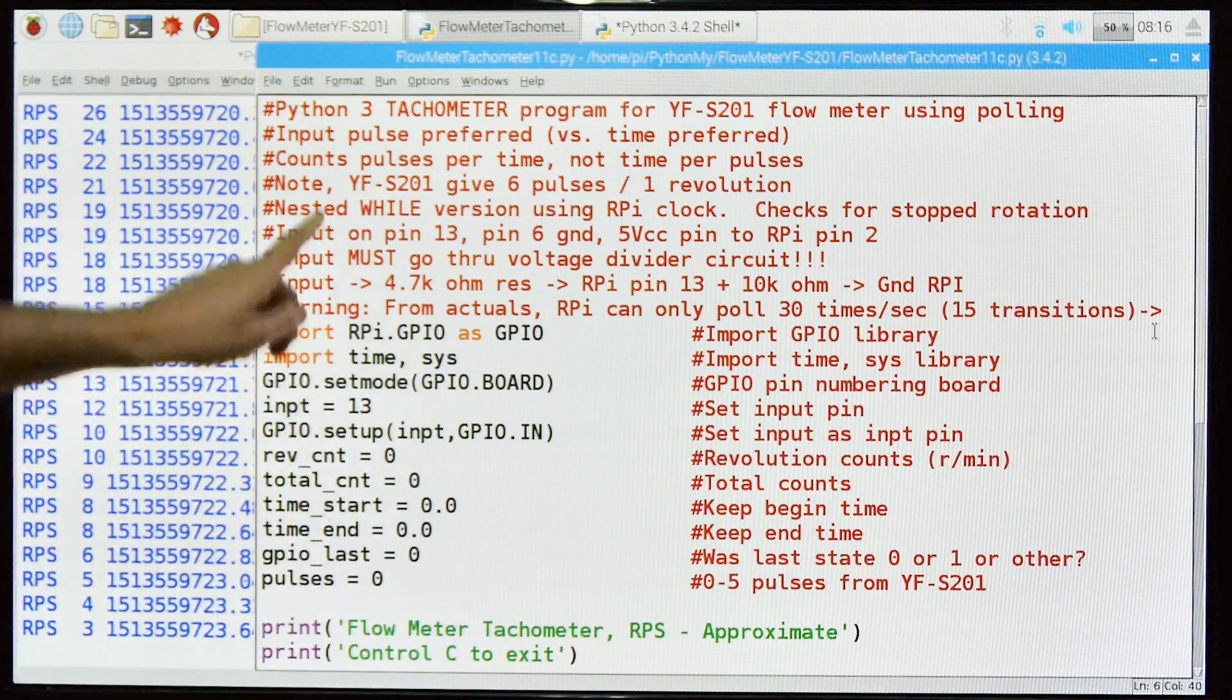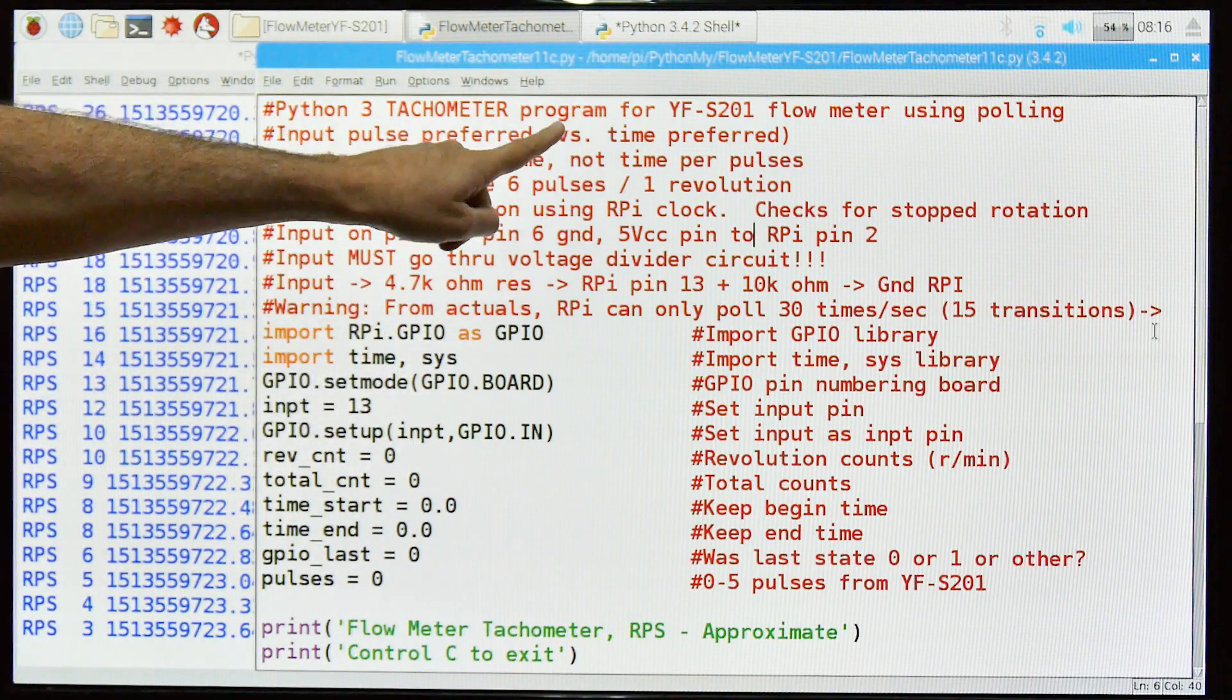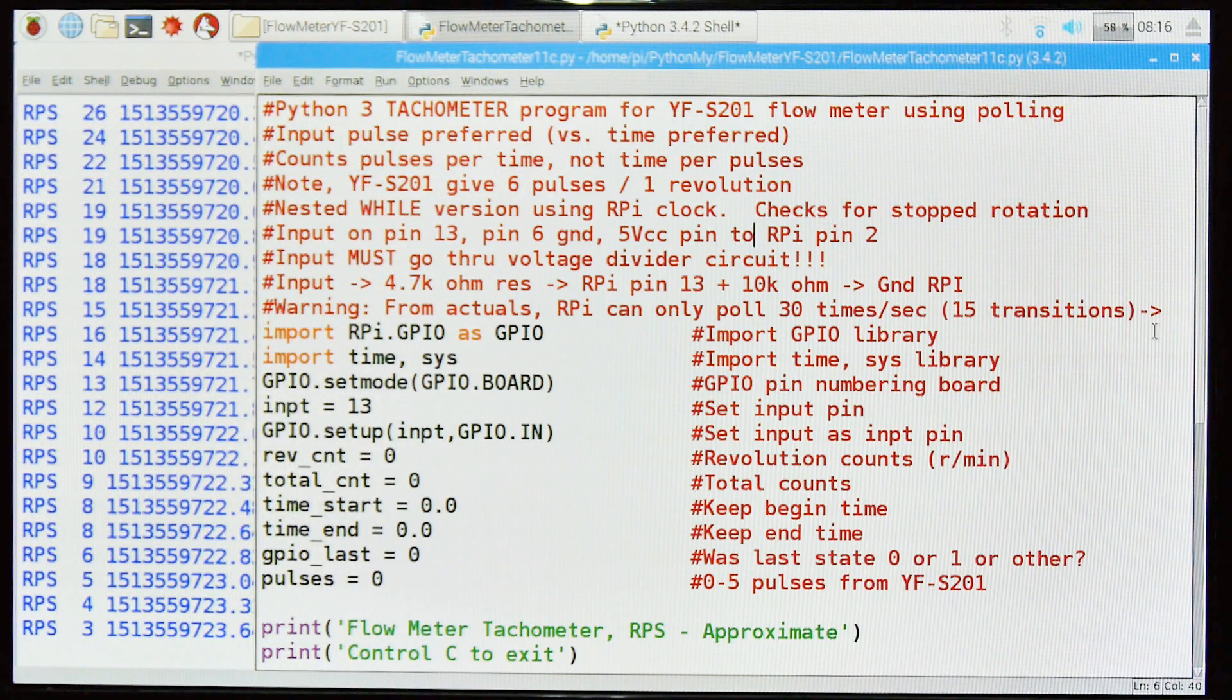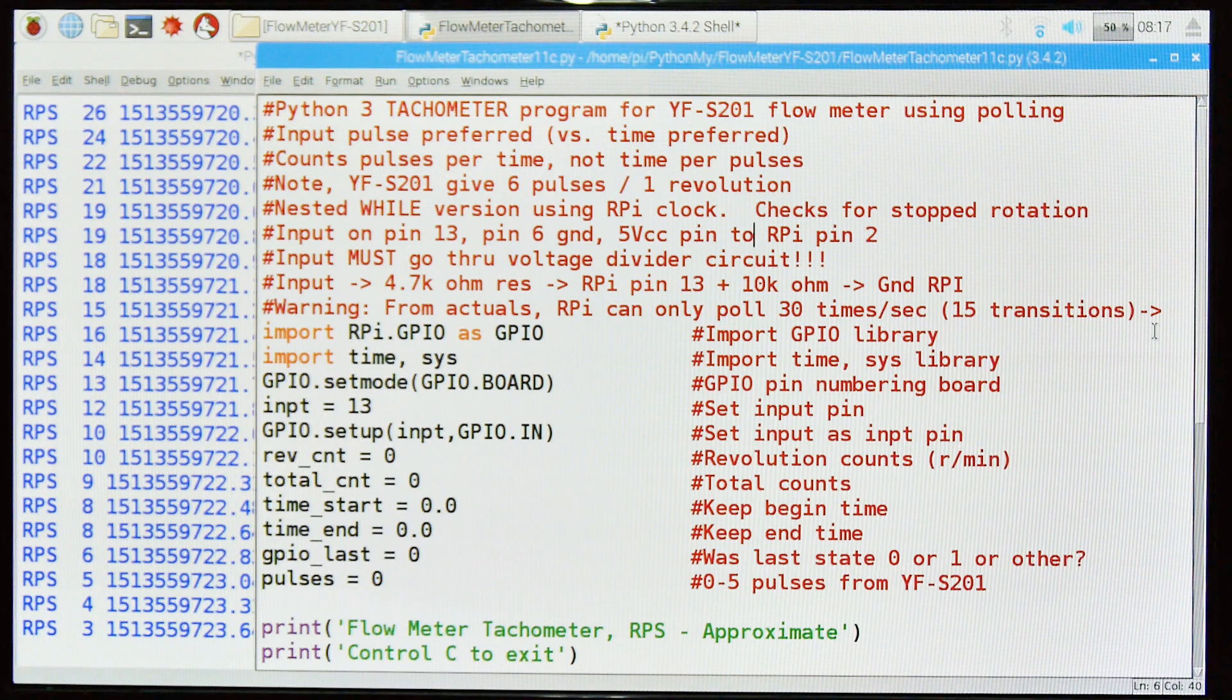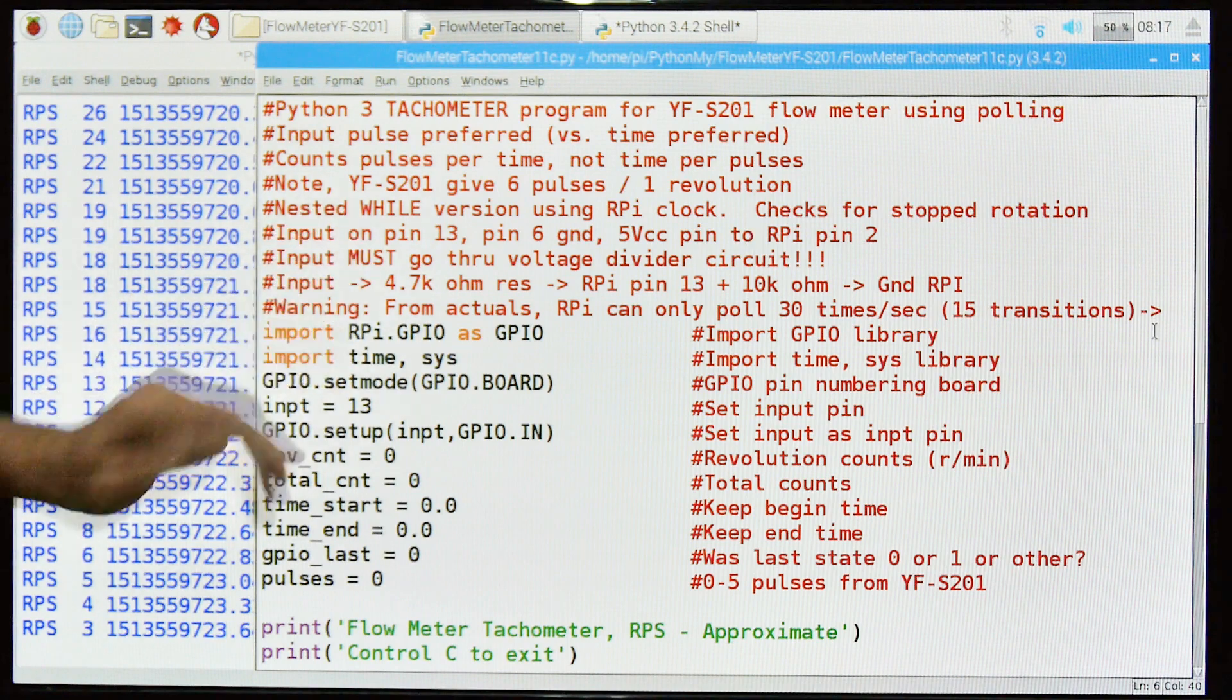This is my Python 3 tachometer program for the YF-S201 flow meter using polling. I wrote this program because I wanted to find out what this meter is doing, and I suspected it wasn't doing what I thought. I originally assumed the meter was giving me one pulse per revolution, and it turns out that's not true. This is how I found it out.